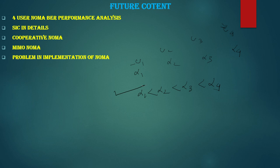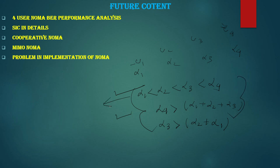There is one more condition that must also be satisfied for four-user NOMA: α4 > α1 + α2 + α3, and α3 > α2 + α1. Only when this condition is satisfied can we implement SIC. This condition is very important for the implementation of SIC. When I cover four-user NOMA I will explain why this condition is needed.